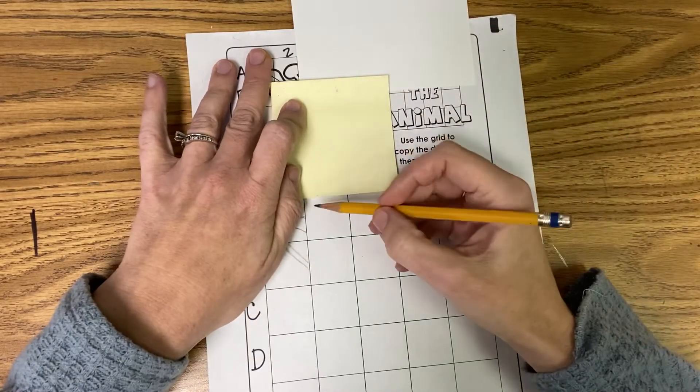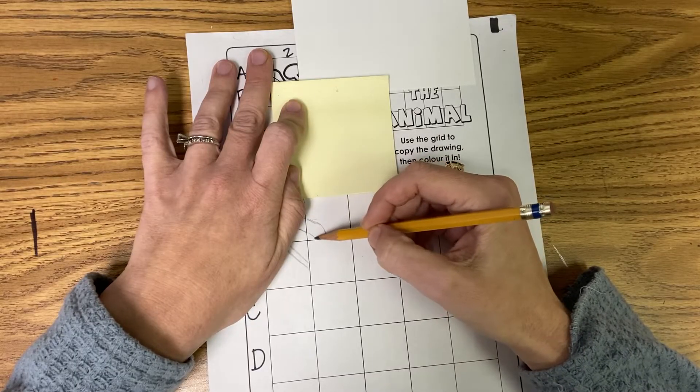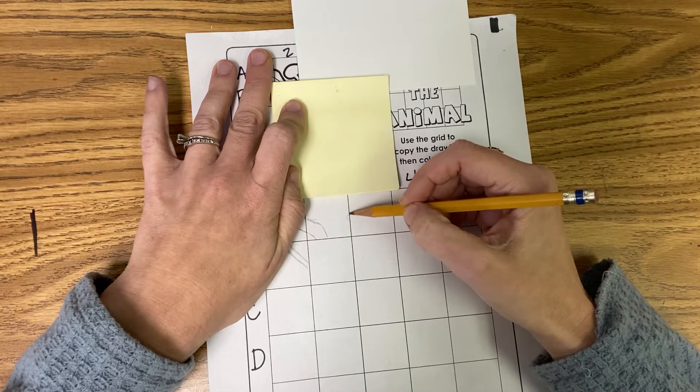Okay, so I can see that this line is coming down and it's going right here and this is going right here. And this is kind of going here.